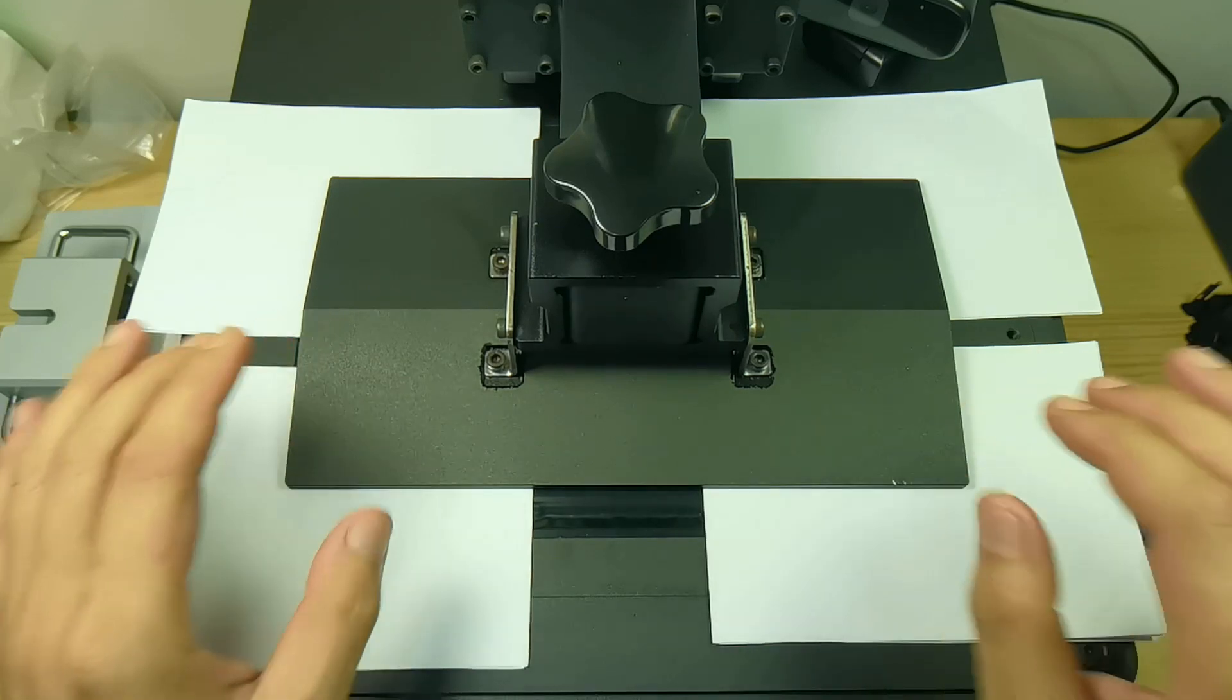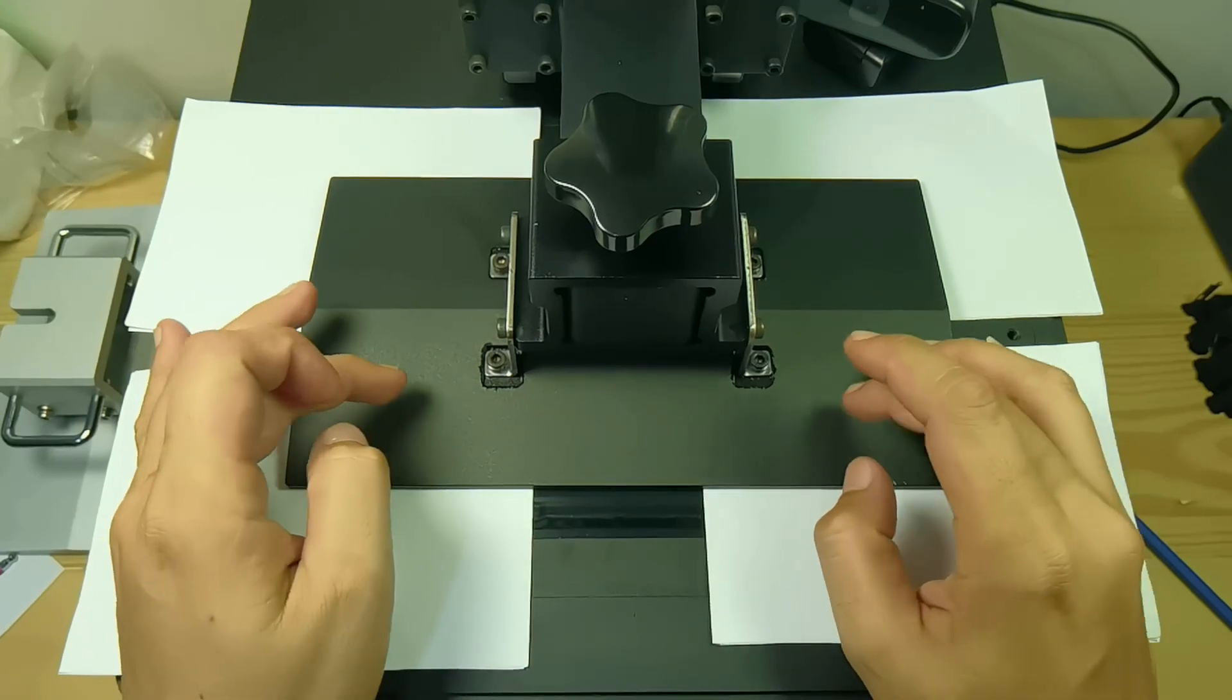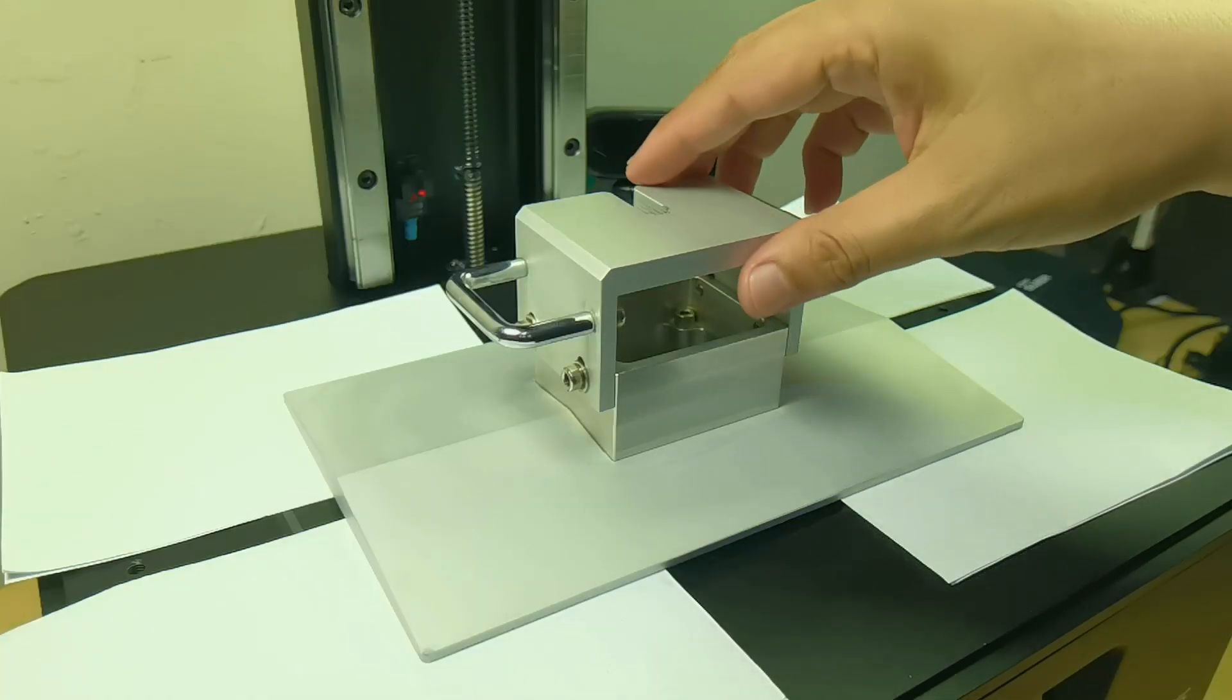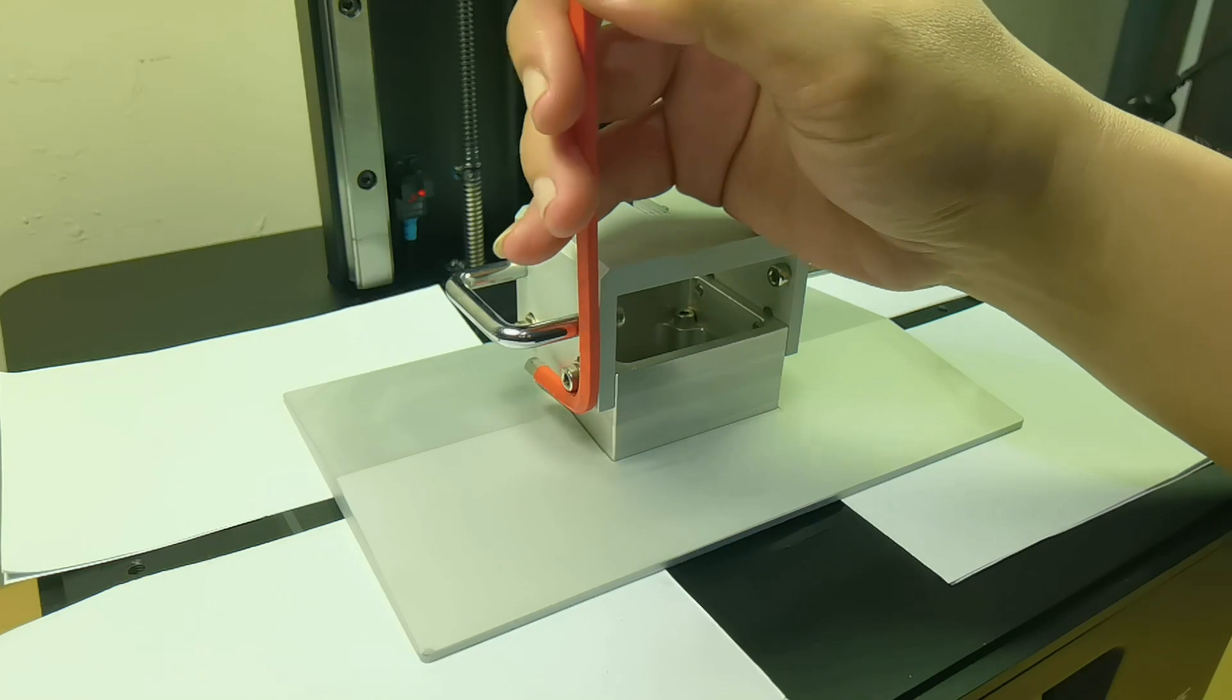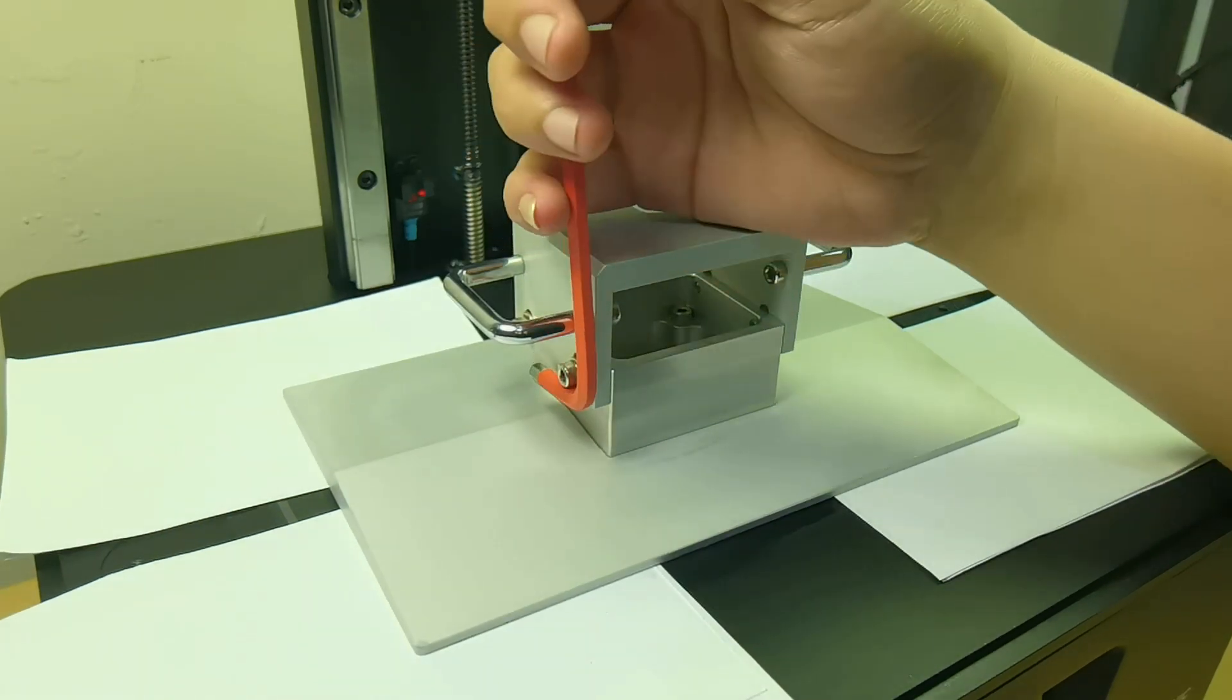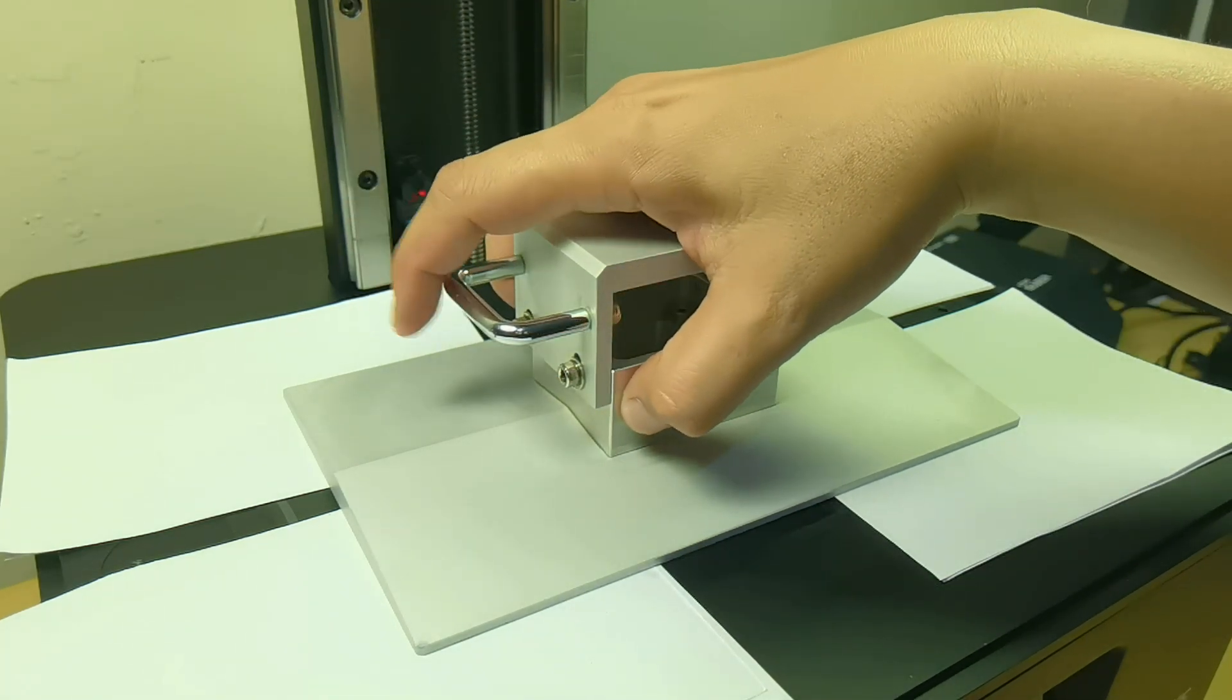These tips work for build plates with similar design like this Mighty 8K or Mini 8K. But if your build plate design looks like this or similar, you could place the Allen key here to hook the bolt and pull it up if you feel the paper is too tight. Or you can also use your finger strength to pinch this part here and pull it up.